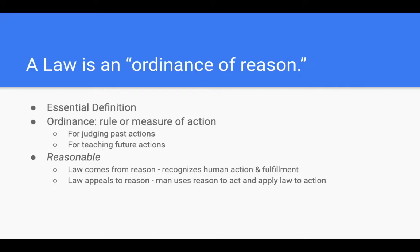For a law to be an ordinance of reason really means two things. One: it comes from reason — when we formulate law, we should have good, reasonable principles for formulating these laws. But at the same time, law appeals to human reason. The prohibition on murder does not actually force you to not kill someone. If law forced us to abide by it, no one would ever break the law. But people break the law all the time because law appeals to human reason — it appeals to our reason that we might choose to live in accordance with it. Law appeals to reason, which essentially means we get to choose to abide by it, but it does not force us.